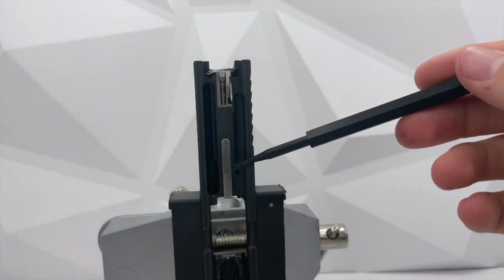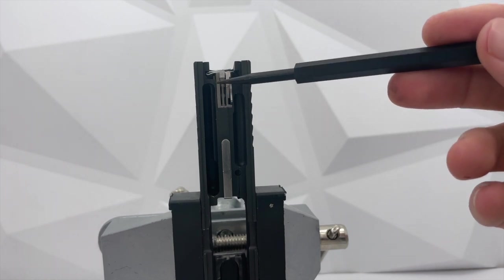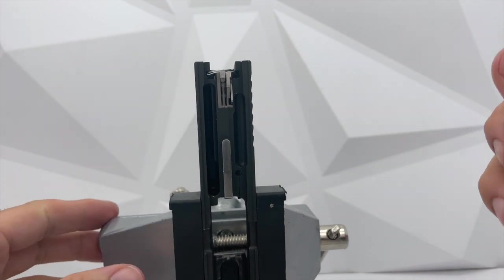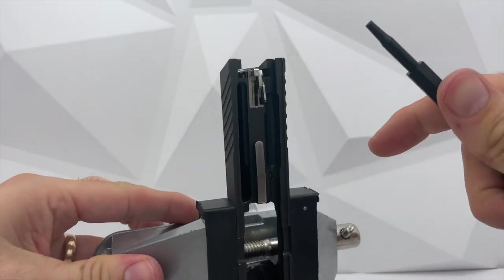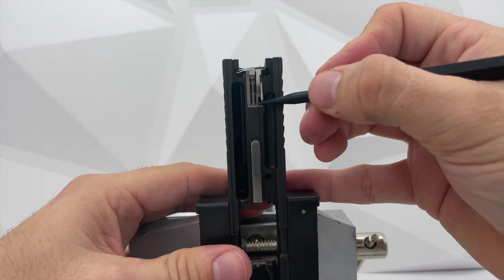My setup is a stripped slide with only the striker assembly installed, just like I described previously. And the slide is on a vice holding it vertically to allow the striker to fall by gravity.